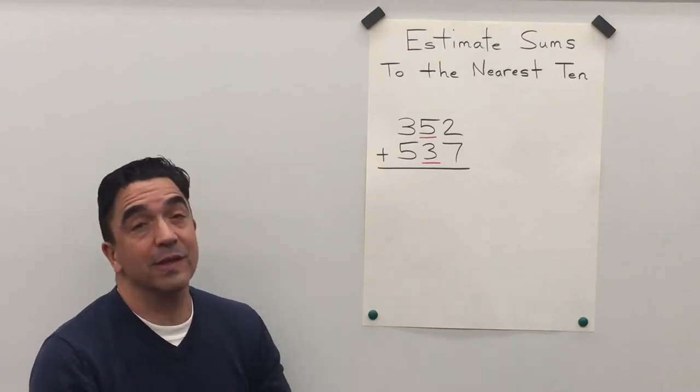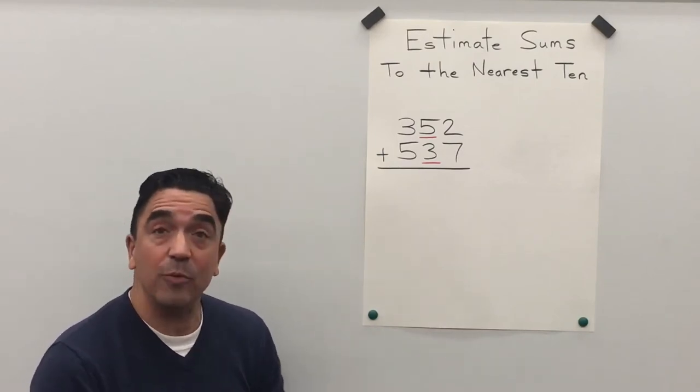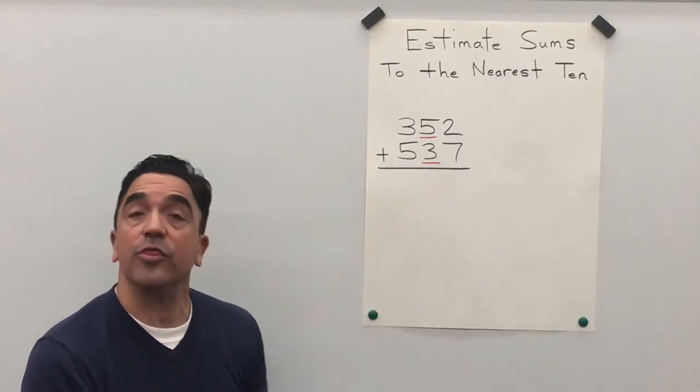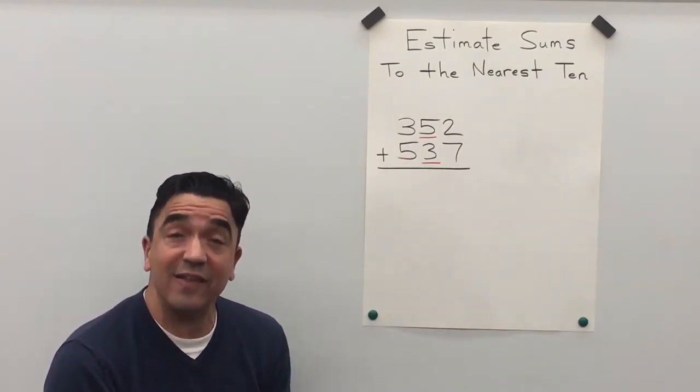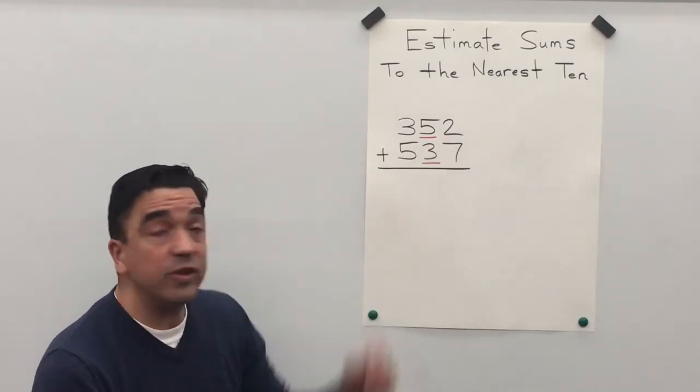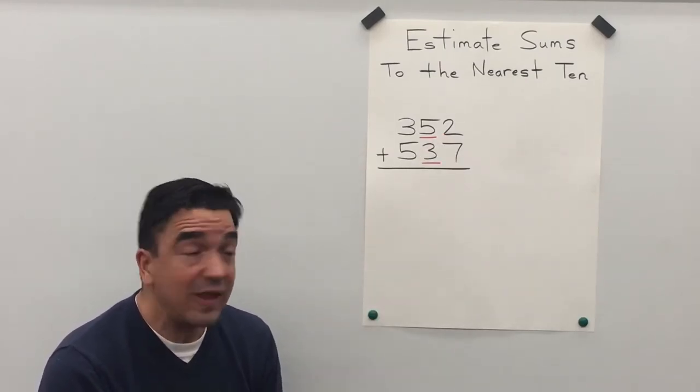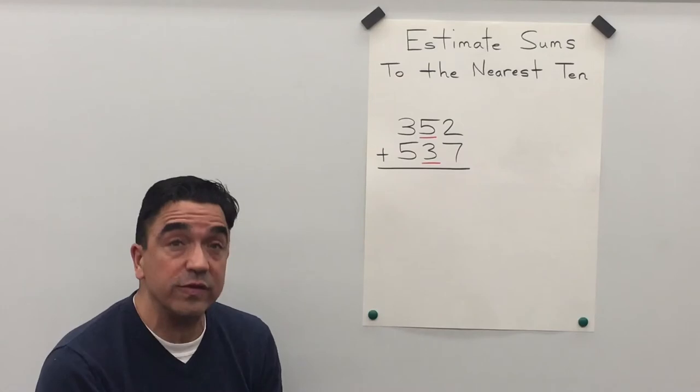Well let's start by rounding. Let's look at 352. I notice that the five is in the tens place and the two in the ones place is going to tell the five what to do.